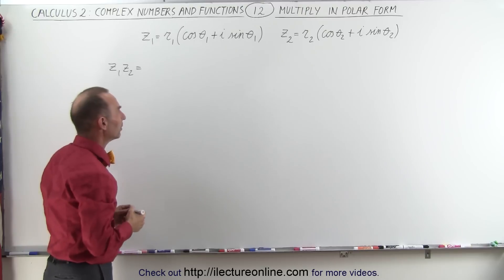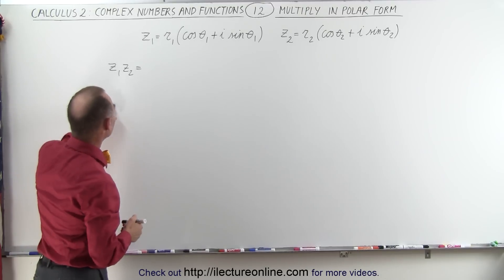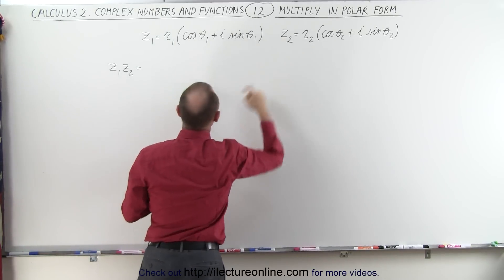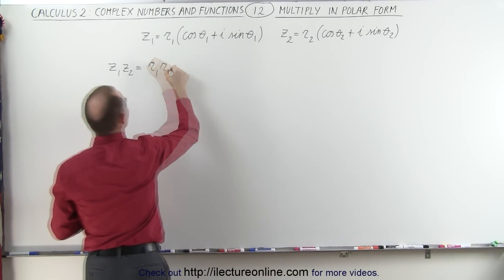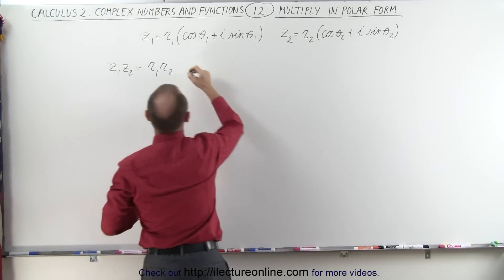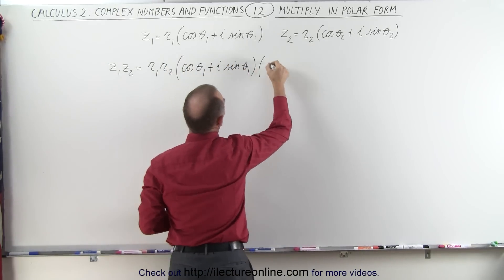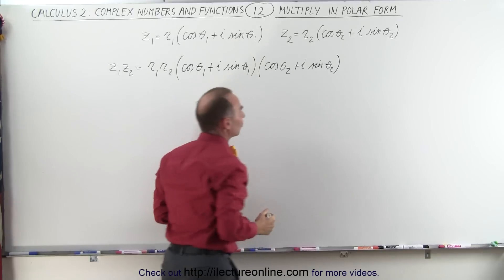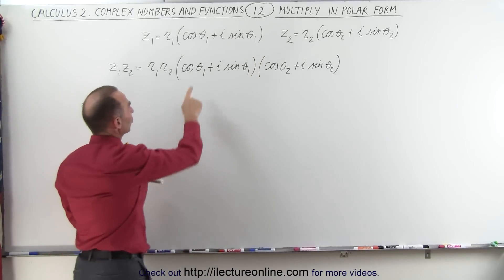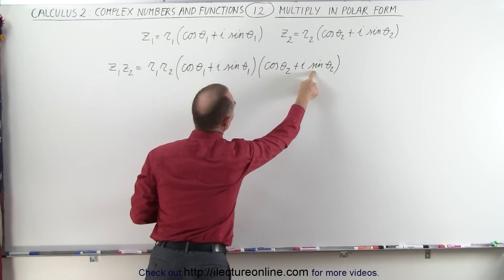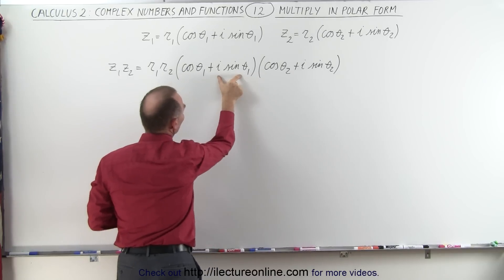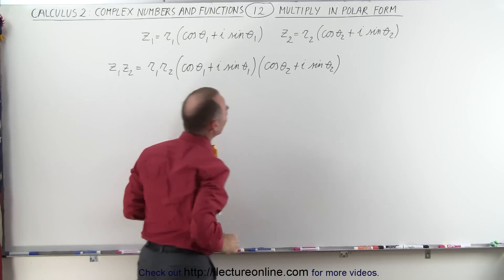So now we're going to multiply those two together and see what that looks like. That means we're going to multiply r1 times r2, and we're going to multiply what's inside the parentheses together as well. And so just like with any product of two binomials, we're going to take the first term and multiply times each of these two, and take the second term and multiply times each of those two as well.